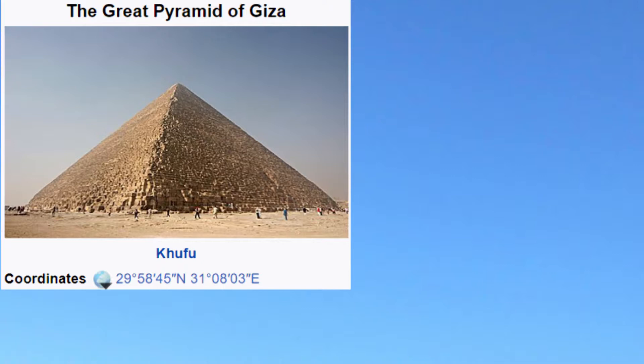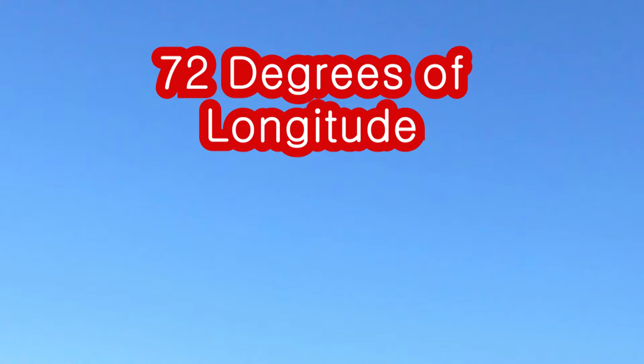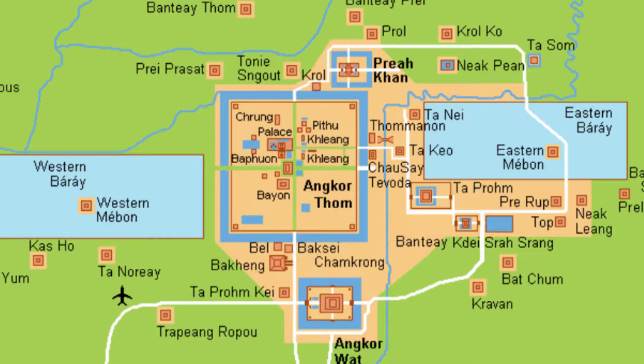The Giza necropolis is located at longitude east 31.15 degrees, and the Angkor Wat complex is situated at longitude east 103.5 degrees. So the distance from Giza and the site of Angkor Wat is 72 degrees of longitude. 103 minus 31 equals 72. 72 is the amount of years for one degree of precession, and also in the Angkor Wat temple complex there are exactly 72 monuments.